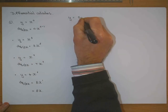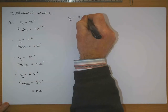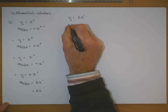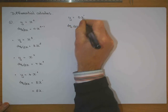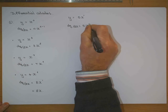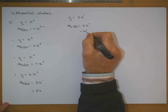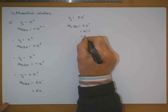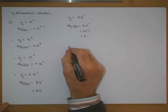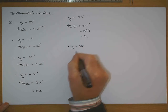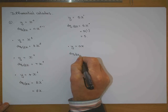If y was equal to 5x, that means 5x to the power of 1, so therefore dy/dx would be equal to 1 times 5, which is 5x to the power of 0, which is 5. Any number to the power of 0 is 1, so the result is 5. From that you'd know if y is equal to ax, what would dy/dx turn out to be?